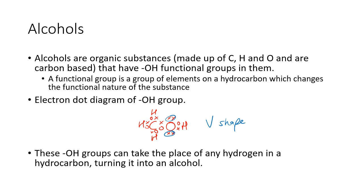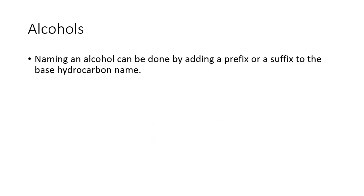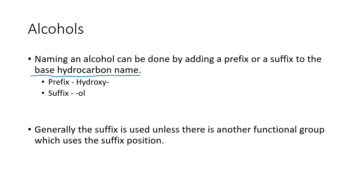These OH groups can take place of any hydrogen in a hydrocarbon turning it into an alcohol. Naming an alcohol can be done by adding a prefix or a suffix to the base hydrocarbon name. You can name them with a prefix of hydroxy or you can name them with a suffix of ol. Generally we use the suffix unless there's another functional group which uses the suffix position, so maybe there'll be two different functional groups and that's when you would need to use the hydroxy in the name instead of the suffix.